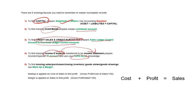This is the fifth topic: markup and margin. These are ratios from your ratio analysis studies. Markup is a profit applied on cost of sales, and margin is applied on sales to find the profit. The formula for markup is gross profit over cost of sales times by one hundred, and for margin it is gross profit over sales times by one hundred.